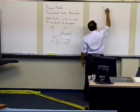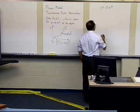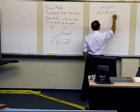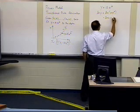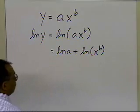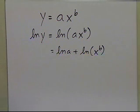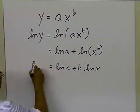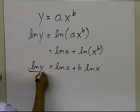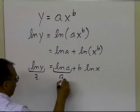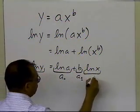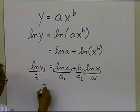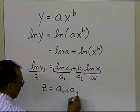Our model is y = ax^b. Taking the log of both sides: log(y) = log(ax^b) = log(a) + log(x^b) = log(a) + b·log(x). Now let z = log(y), a0 = log(a), a1 = b, and w = log(x). Making those substitutions gives us z = a0 + a1·w.